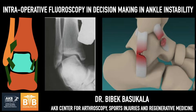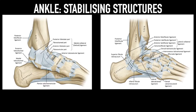The ankle is a synovial joint which has dorsiflexion and plantar flexion movement. The ankle joint forms with the help of three bones. The distal part of the tibia and distal part of the fibula make the ankle mortise, under which the head of the talus is located. Thus the ankle joint is formed with the bony architecture, and this ankle joint is not a very stable joint.